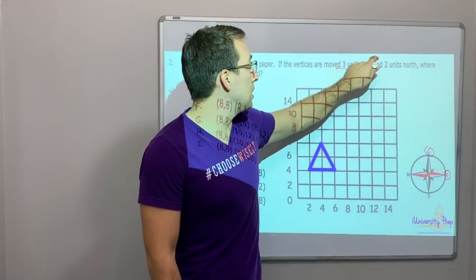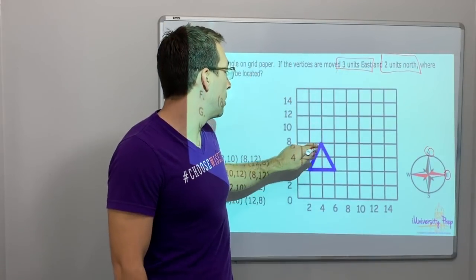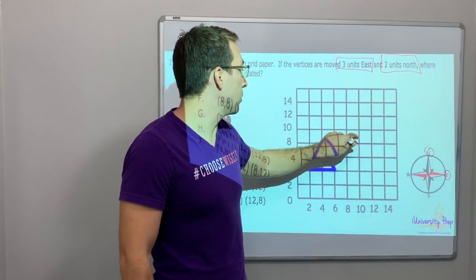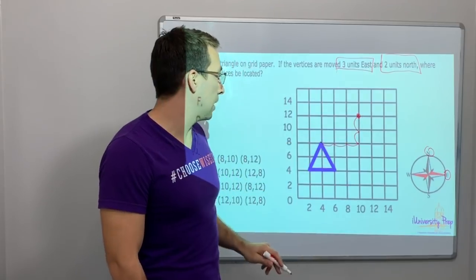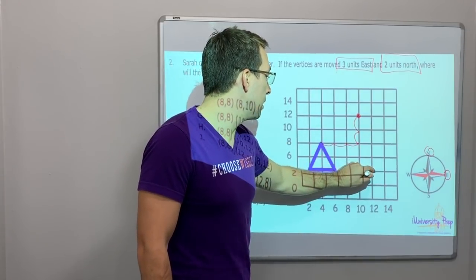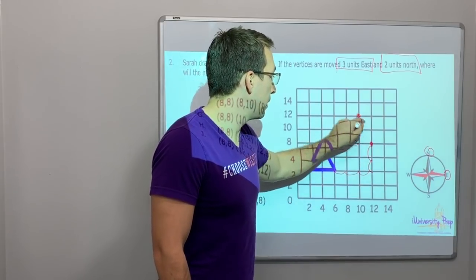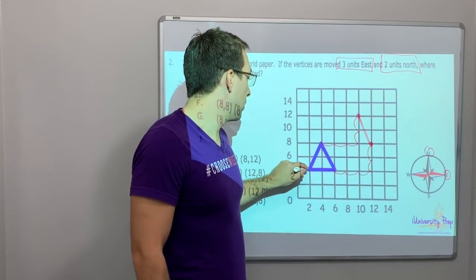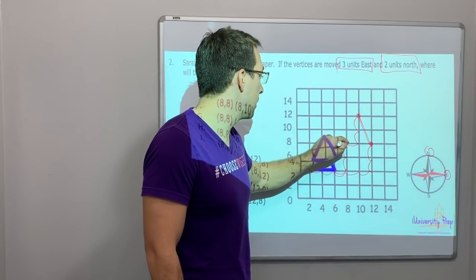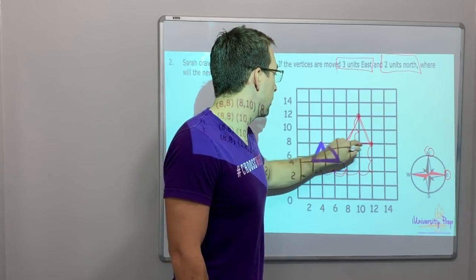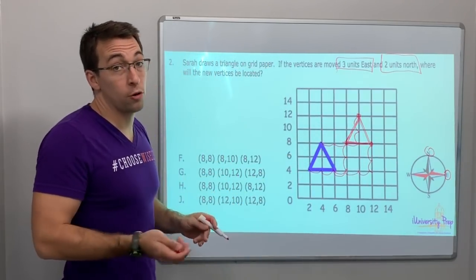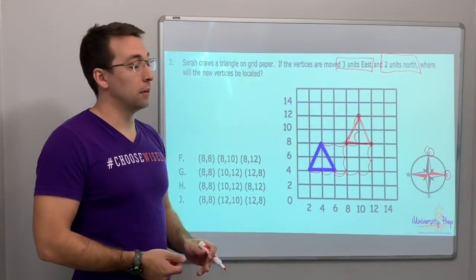If the vertices are moved three units east and two units north, where will the new vertices be? So we need to go east and north. Three units east, two units north. So let's go one, two, three east and two north. One, two. One, two, three. One, two. One, two, three. One, two. Okay. So here is our new triangle. You have to draw, if you're moving a shape, you have to draw each vertice.